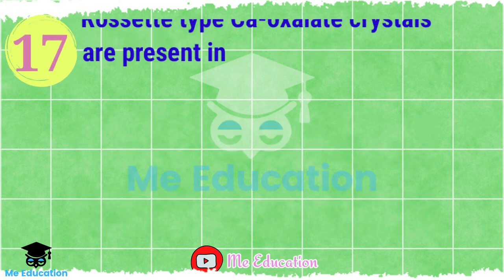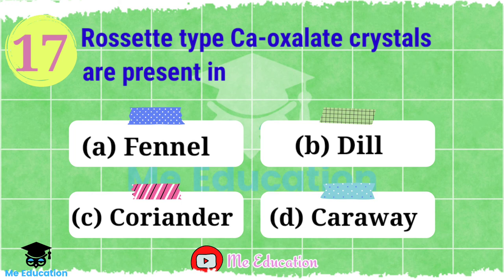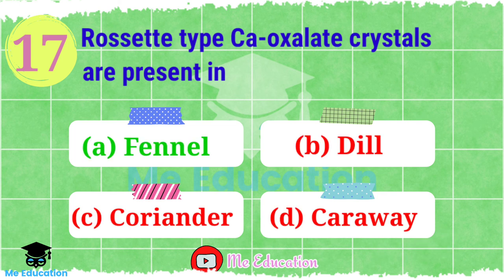Question number 17: Rosette-type calcium oxalate crystals are present in — Option A: fennel; Option B: dill; Option C: coriander; Option D: caraway. If you think deeply you can find the answer — this is very easy. The right answer is Option A, fennel.